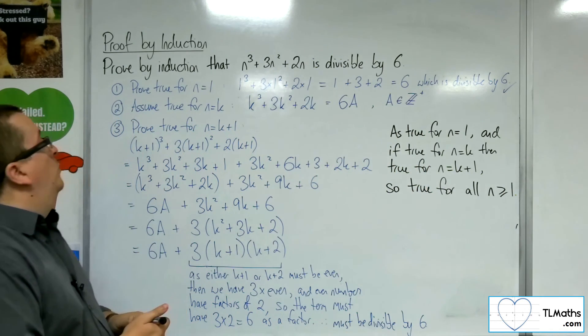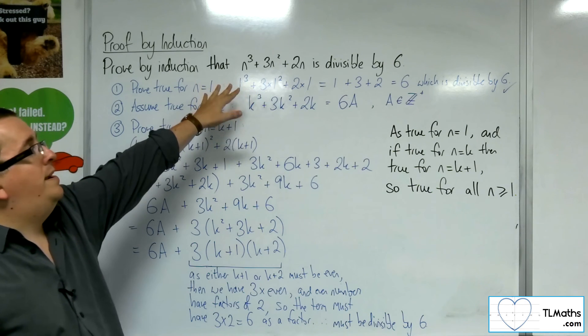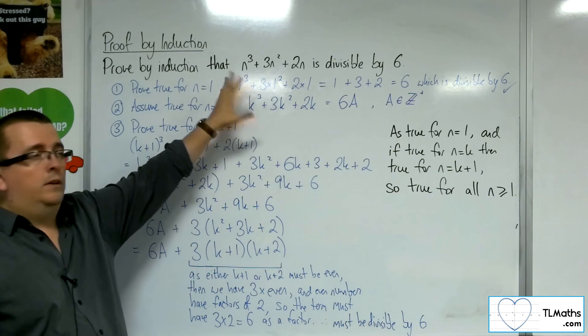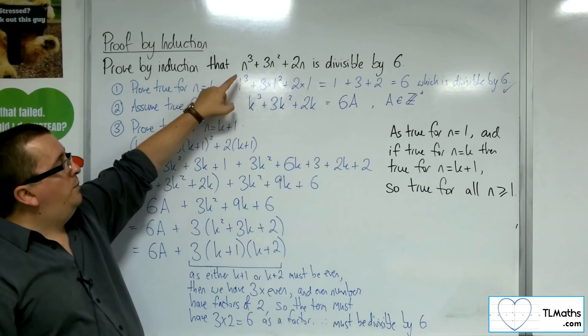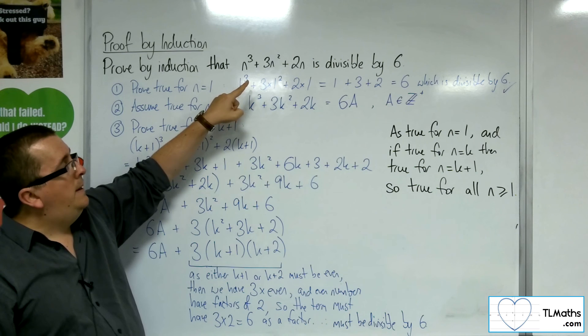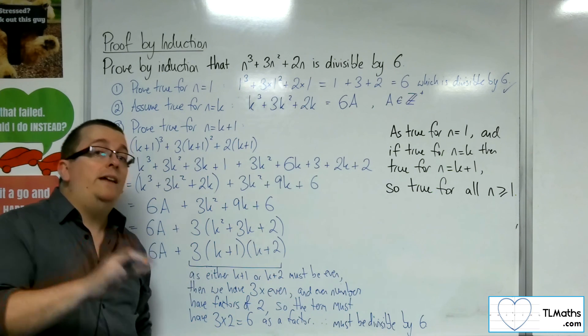And so, we've proved by induction that n cubed plus 3n squared plus 2n is divisible by 6. Now, this may be something. One of this proof in particular, we've actually, well, I've actually looked at before in the A-level maths videos.